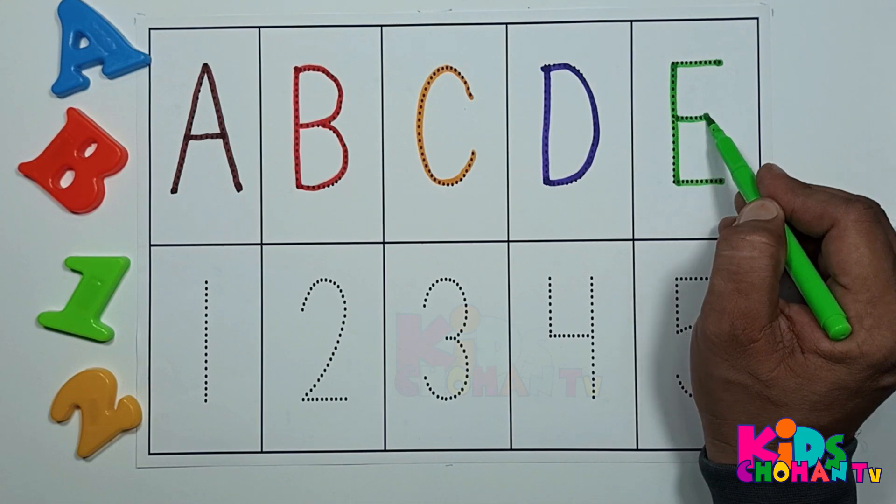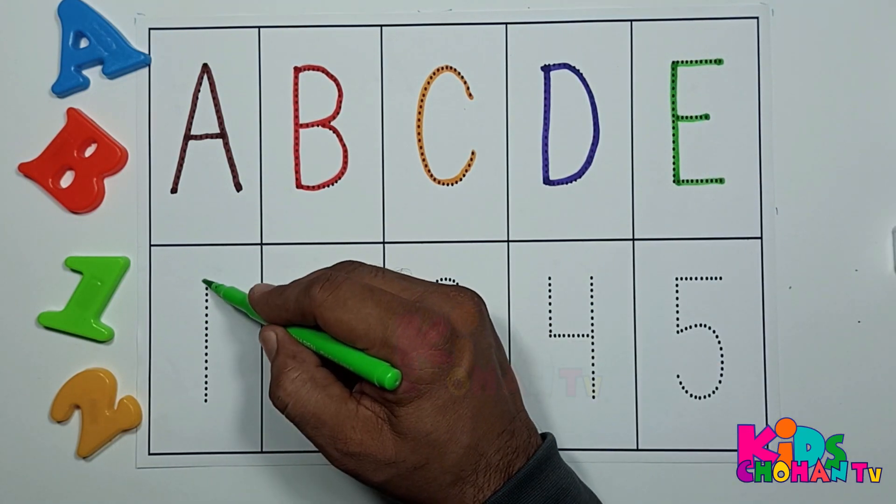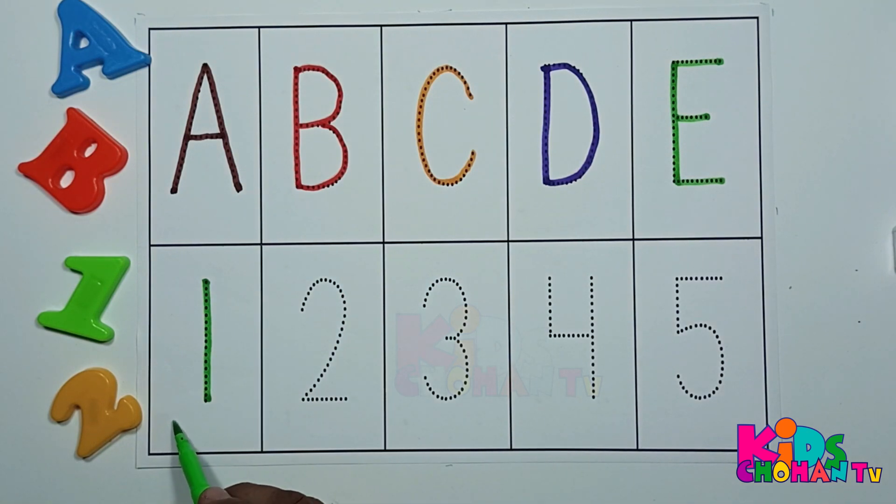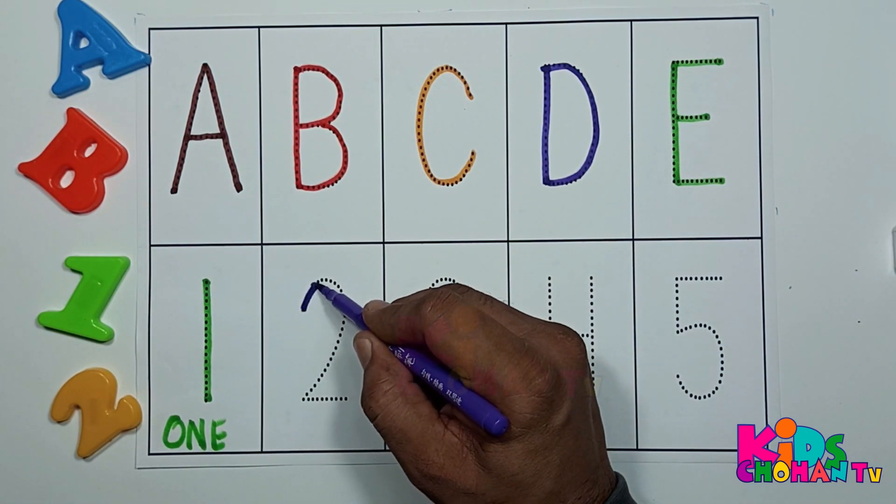D for dolphin. Press capital letter E. E for elephant. Numbers. Number one: O-N-E, one.